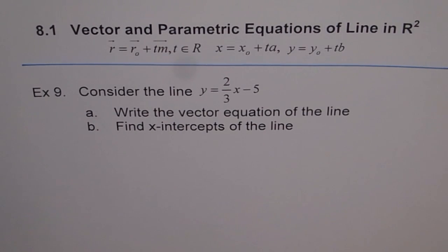Example 9. Consider the line y equals 2 over 3x minus 5. Write the vector equation of the line. Find x-intercepts of the line.